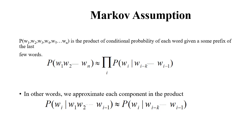By applying the Markov assumption, the probability of the state sequence W1, W2, ..., WN is the product of conditional probabilities of each word given some prefix of the last few words. The parameter K specifies how many previous words to consider. If K equals 1, the probability of each word depends only on the single previous word.